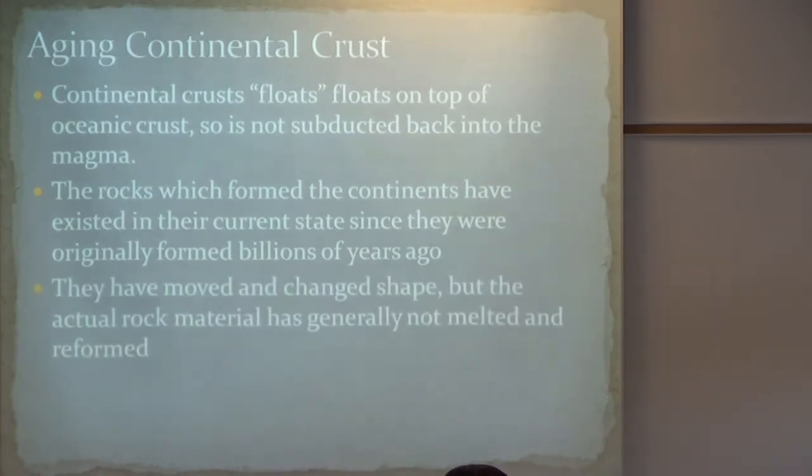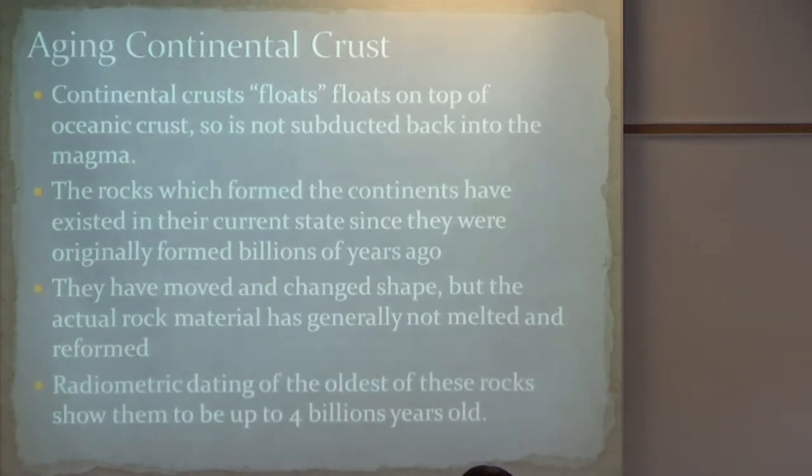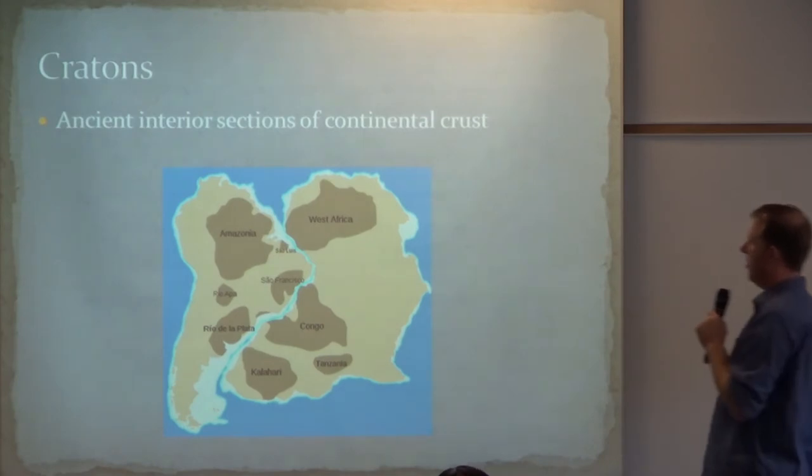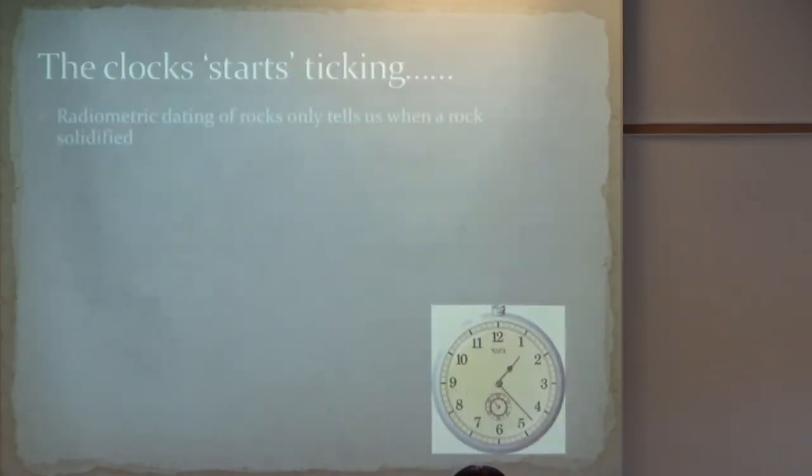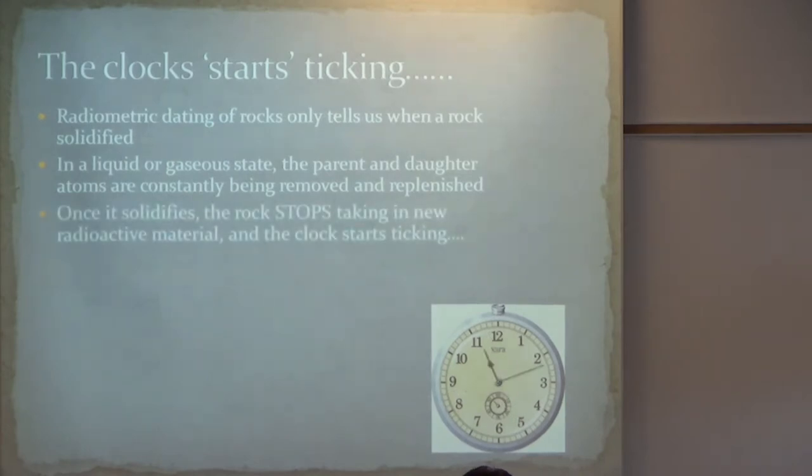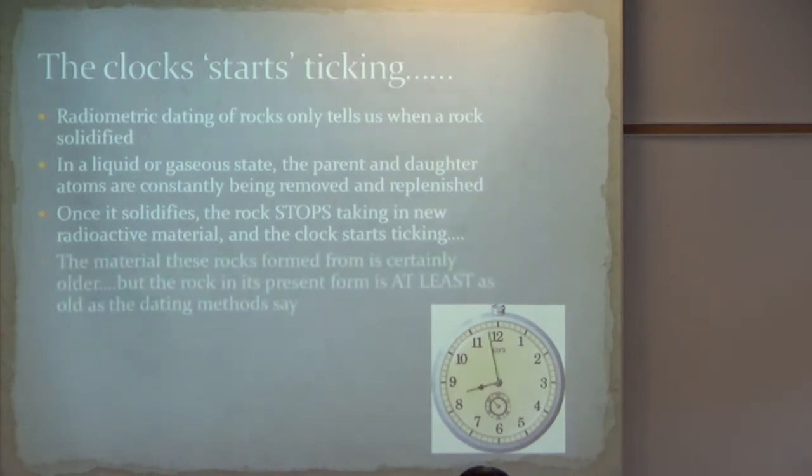The rocks which formed in the continents have existed in their current state when they were originally formed billions of years ago. They have moved, they've changed shape, but the actual rock material hasn't melted and reformed. And radiometric dating of these continental rocks that are deep in the interior of the continent show them to be about 4 billion years old. So, here's some examples of what are called cratons. These darkened sections represent some of the oldest rocks on the planet. You know, this is South America, West Africa. So, when the clock starts ticking, the radiometric dating tells us when a rock is solidified from magma. In a liquid or gaseous state, the parent and daughter atoms are constantly being removed and replenished. So, that's why it only works once the rock solidifies. So, once it stops taking in that new radioactive material, that's when the clock starts ticking. And I'm going to, I'm running out of time, so I'm going to kind of zip through this.